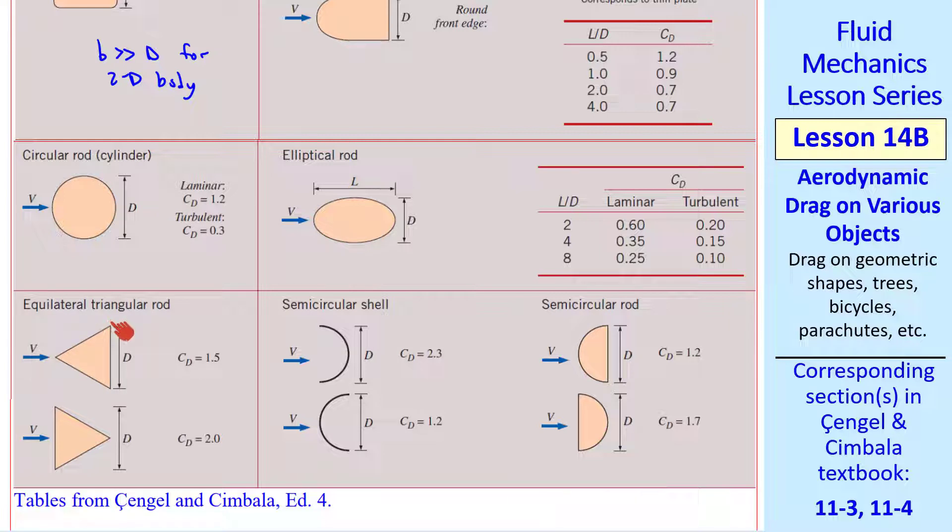Here are some other geometric shapes like triangles. The drag coefficient is lower when the point of the triangle is aligned into the flow. It's still pretty high because of flow separation around these sharp edges. But in this flow, the flow separation is right at the leading edge, and the drag coefficient is not surprisingly higher.